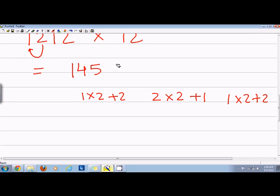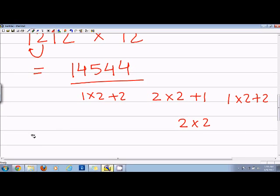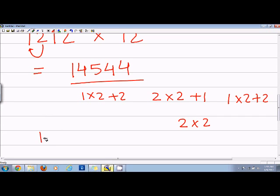So I can check if my answer is correct. I'll say 1212 into 12, and that will be equal to 4, 2, and then 2, 1, 2, 1.